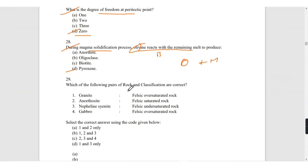Which of the following pairs of rock classification are correct? Granite is felsic oversaturated, correct, it is rich in silica. Anorthosite is felsic saturated rock, correct. Nepheline syenite is felsic undersaturated, it will not be rich in silica. So answer will be one, two, and three.